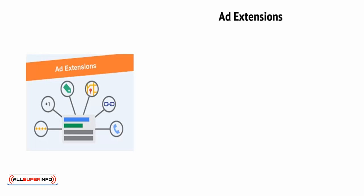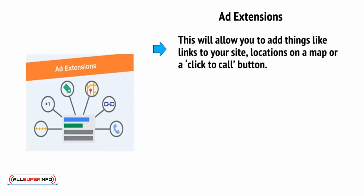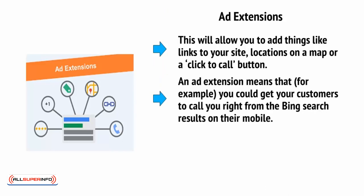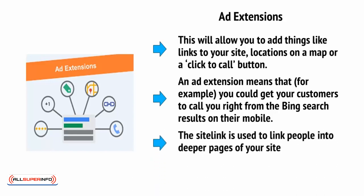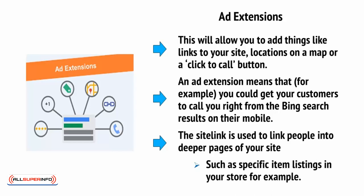Another neat feature of Bing is the ability to add ad extensions. This will allow you to add things like links to your site, locations on a map, or a click-to-call button. An ad extension means that, for example, you could get your customers to call you right from the Bing search results on their mobile. The site link is used to link people into deeper pages of your site, such as specific item listings in your store.